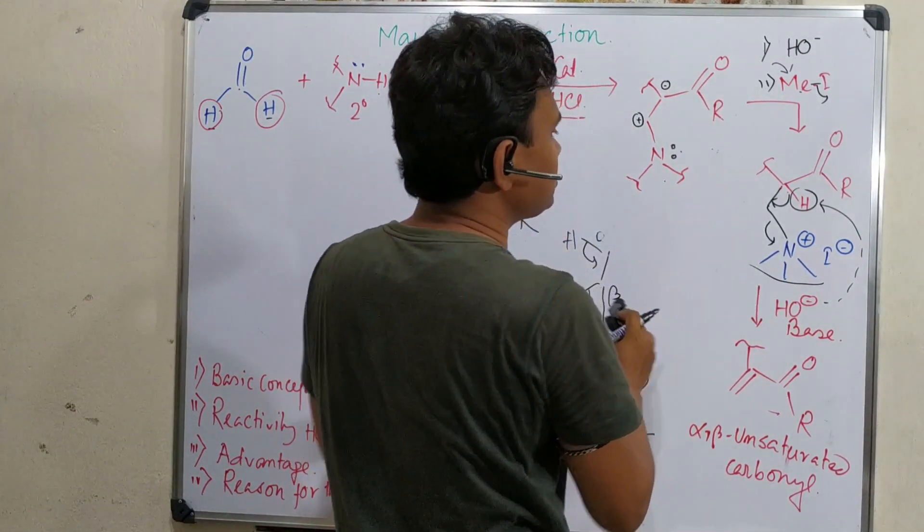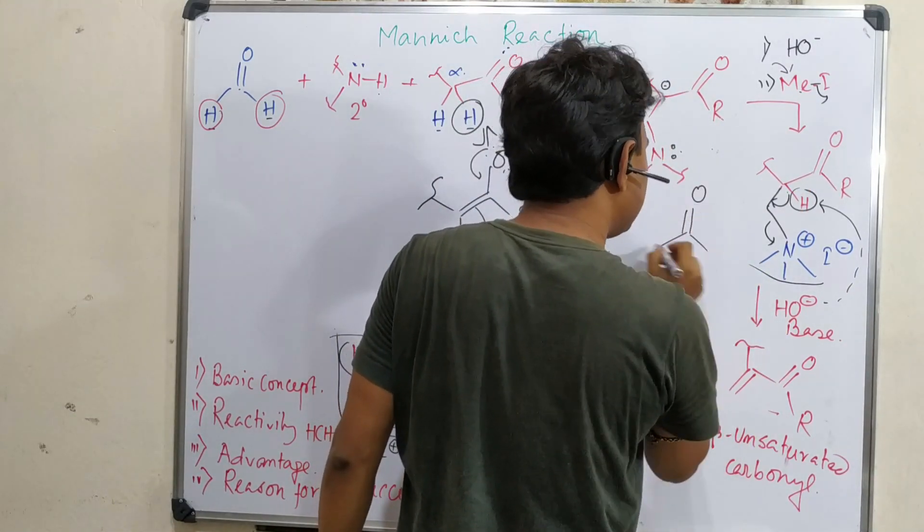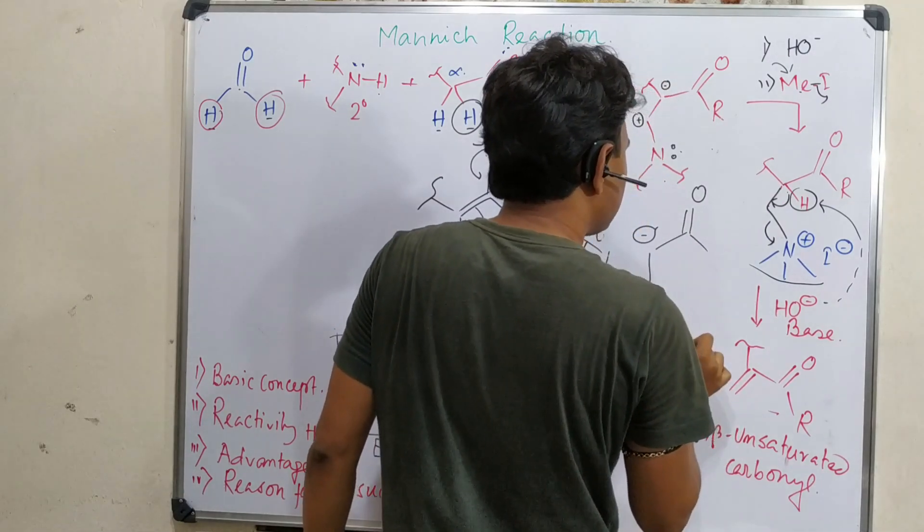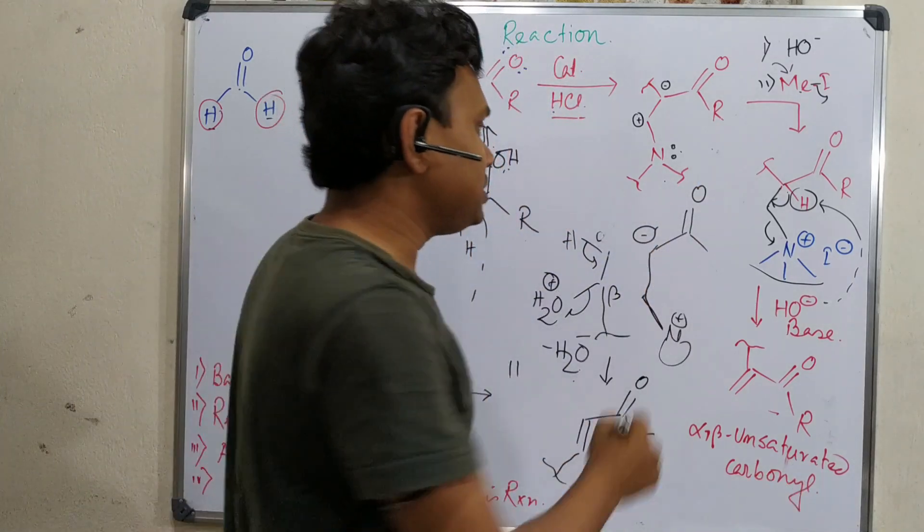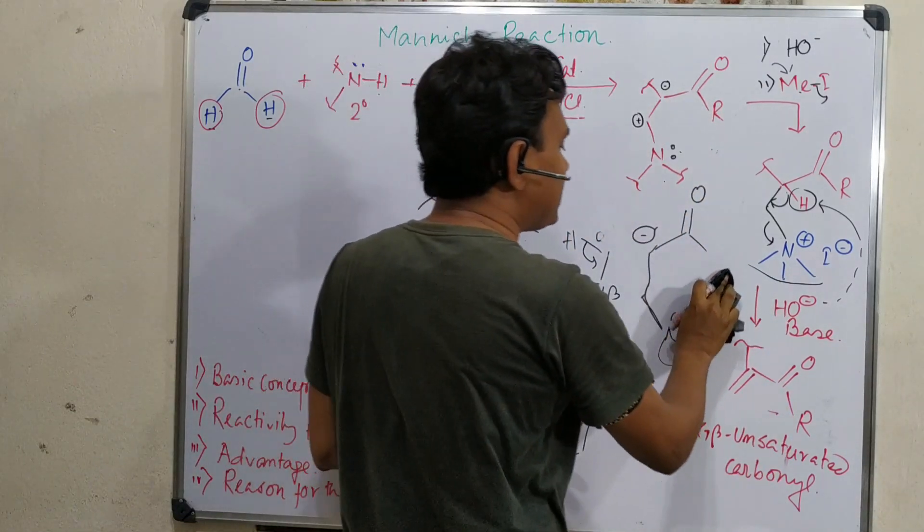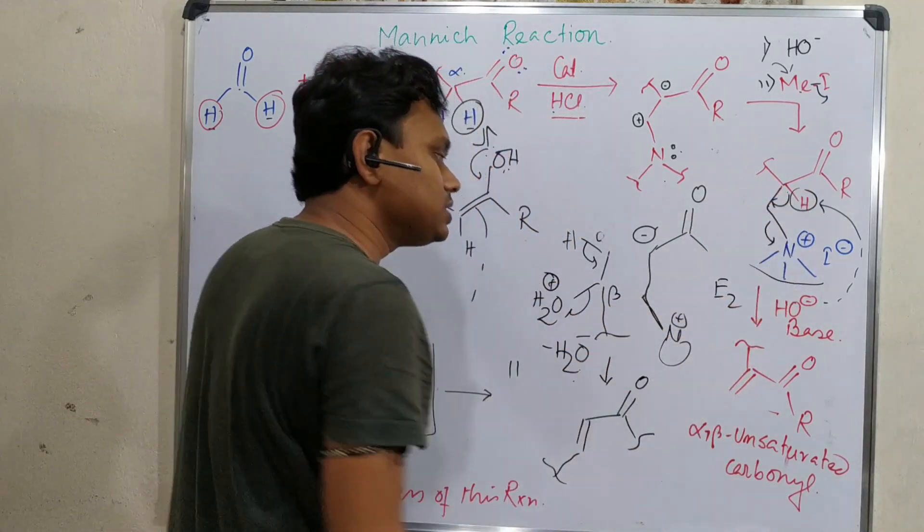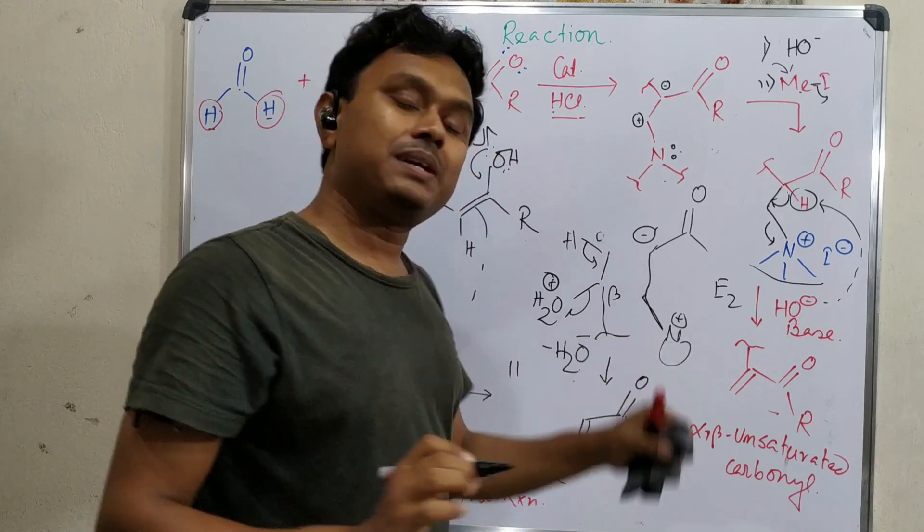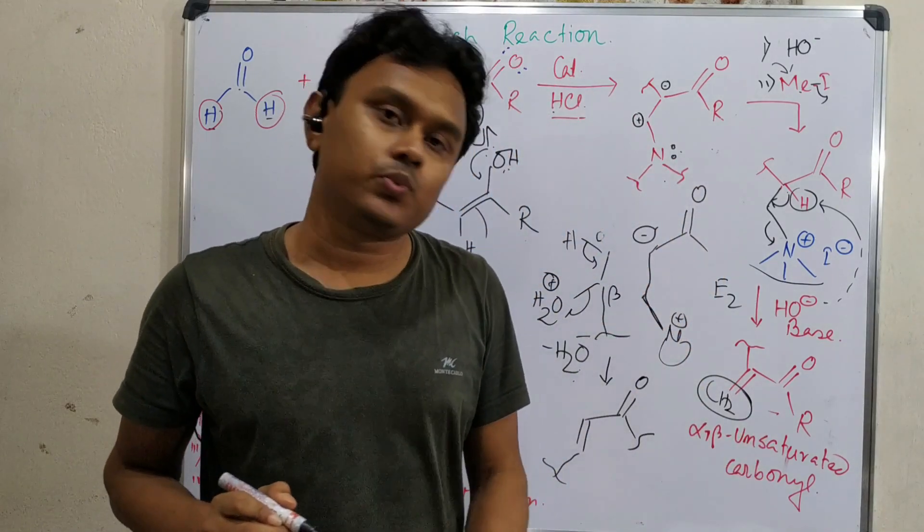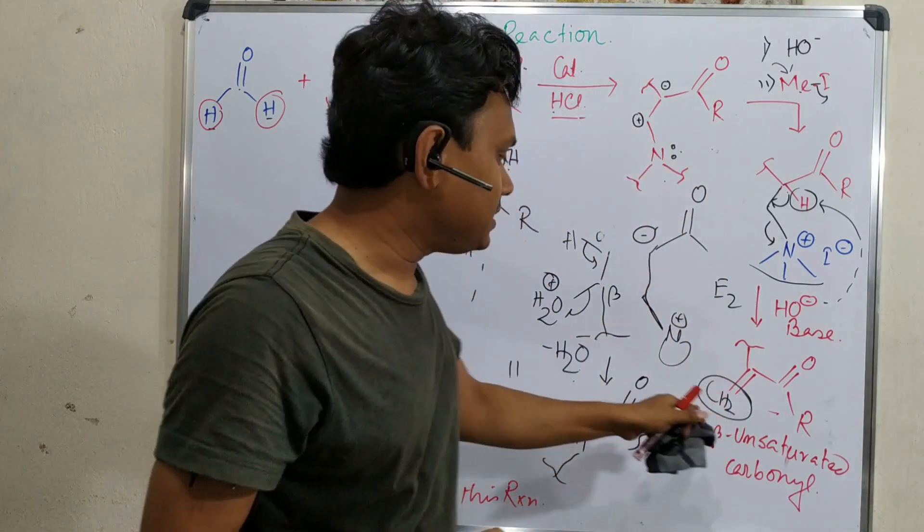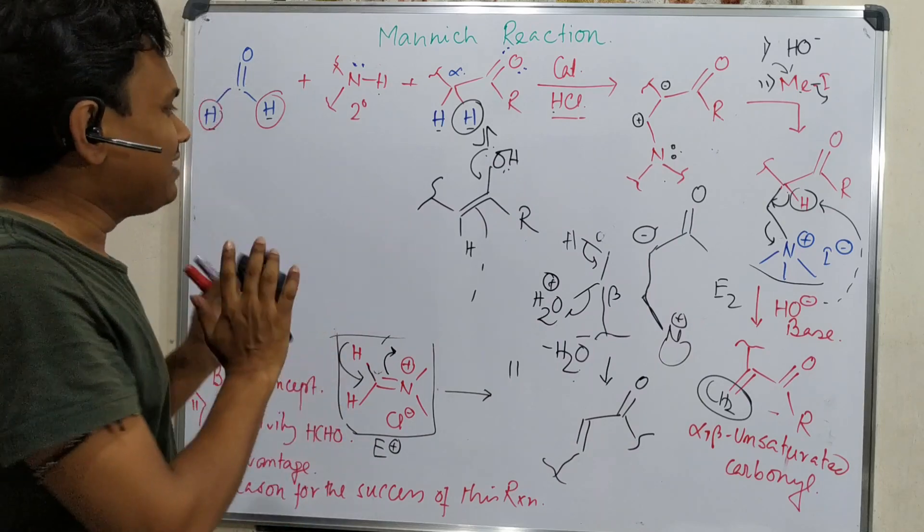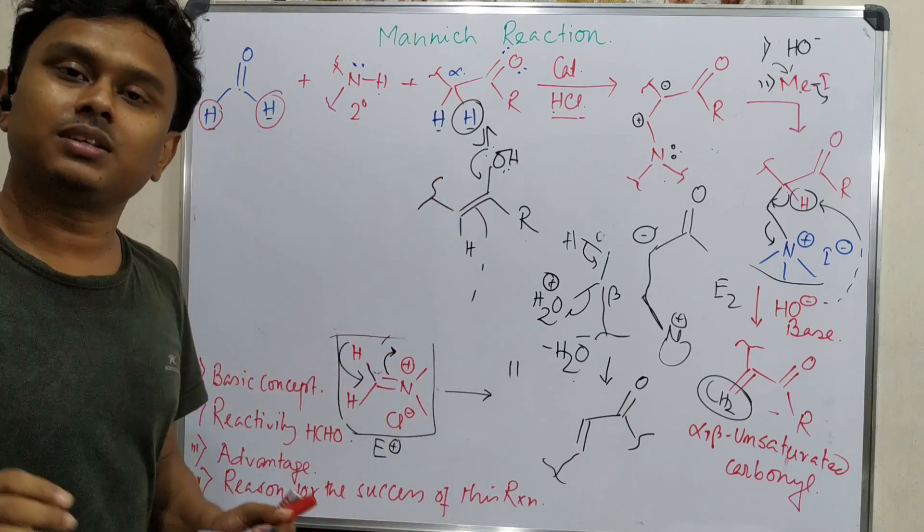It is now a salt and in presence of base, this base abstracts this proton and it eliminates. If you look closely, this anion is generated here and this anion is also resonance stabilized. So that's why generally you can see E2 type elimination. This E2 type elimination pathway is followed to prepare this CH2. What is the basic difference about aldol condensation? Basic difference is the CH2. In simple aldol condensation we can't introduce this CH2 group, but here we can introduce this. So this is the actual advantage of this reaction.